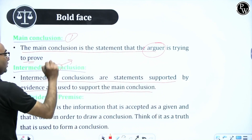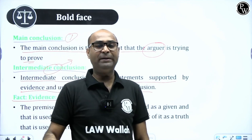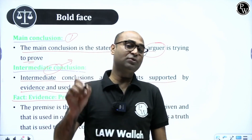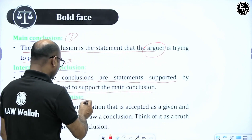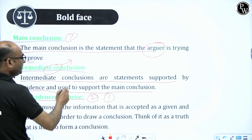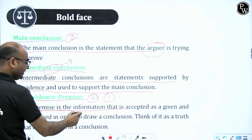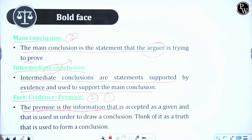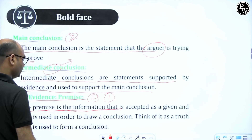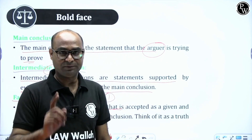Fact, evidence, and premise are all synonyms of one another — in short they are called premise. Premise means a piece of information based on fact. Your first job is to know about premise, second job is to know about conclusion. The premise is the information that is accepted as a given and used in order to draw a conclusion. Think of it as a truth that is used to form the conclusion. So premise is the base of any conclusion, and conclusion is derived information from premise.